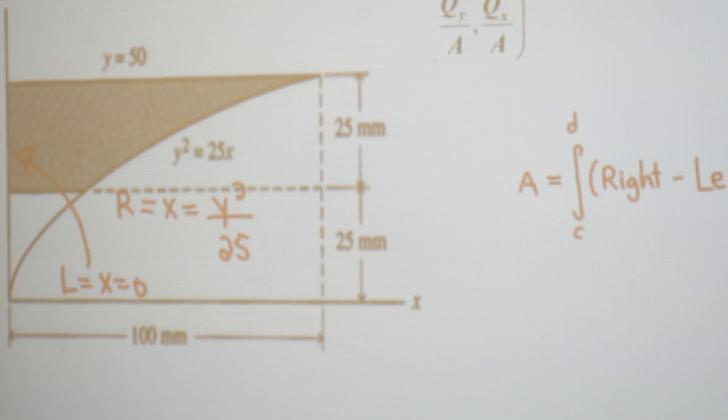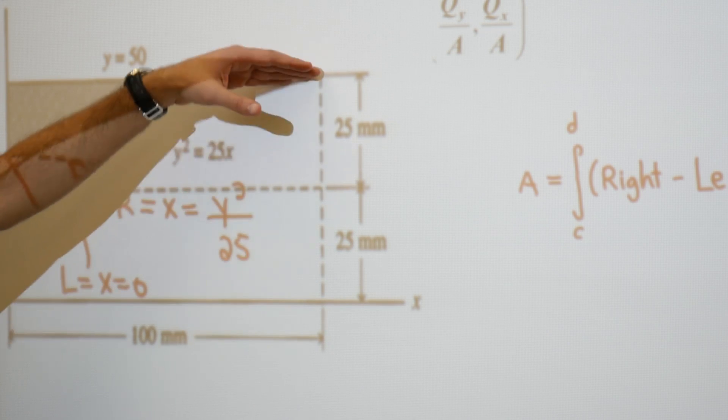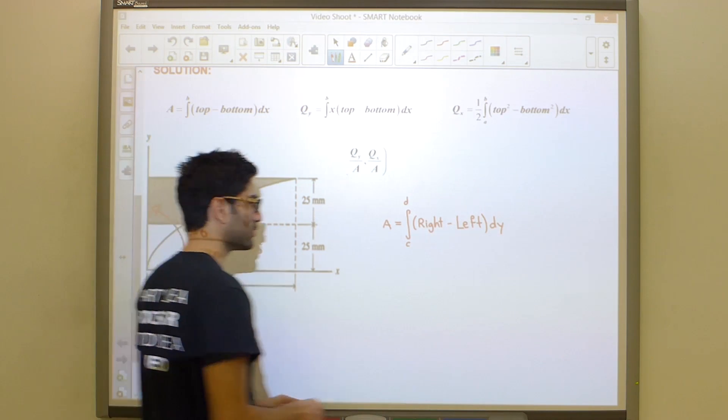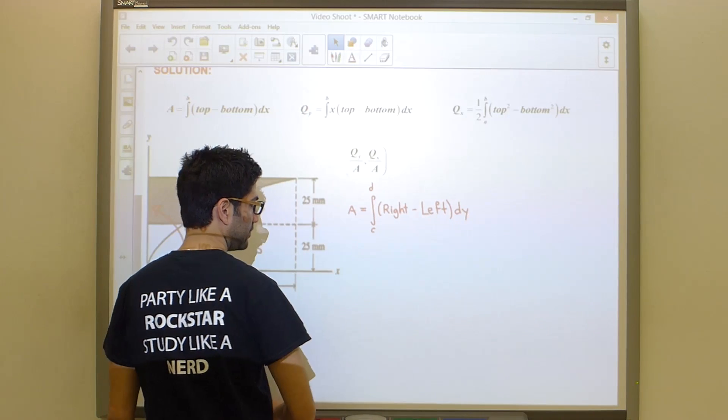So the good news is the left is going to become 0. And clearly, our y values go from 25 to 50 millimeters in this case. So if we apply this first formula, we're going to quickly get our area.